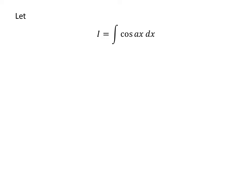Let I be equal to integration of cosine of a times x with respect to x. Let us apply the substitution method to solve the integral. Assume a times x is equal to u.